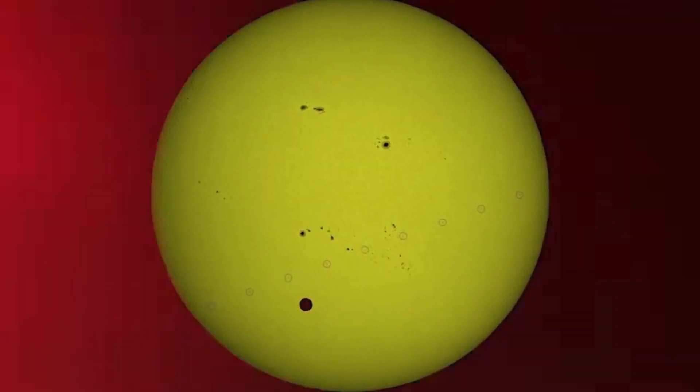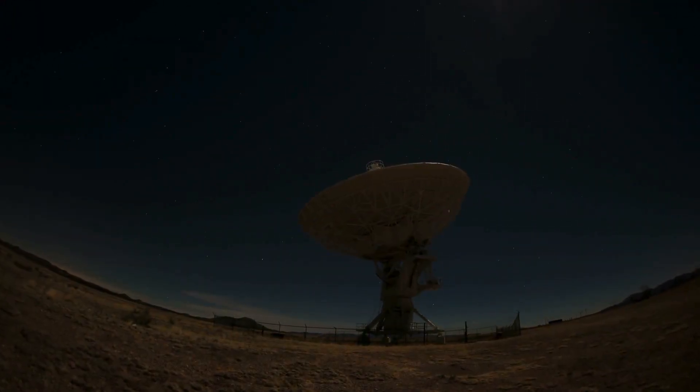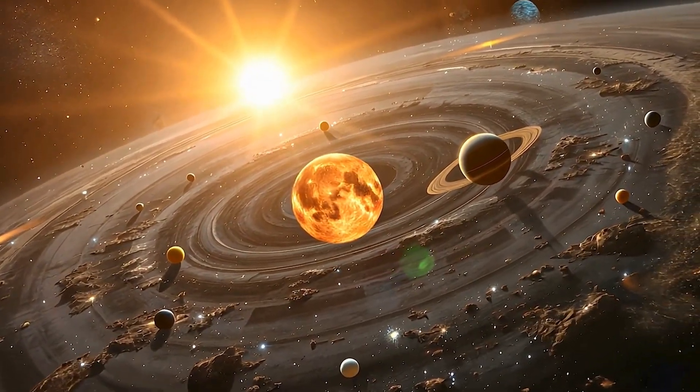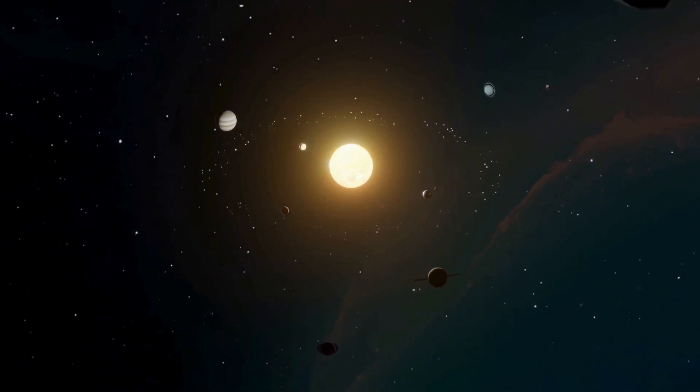Hubble cannot capture the entire Moon's surface in one image due to its large apparent size in our sky. Other missions, such as NASA's Lunar Reconnaissance Orbiter, provide far better imagery, making the Moon a less frequent subject for Hubble.